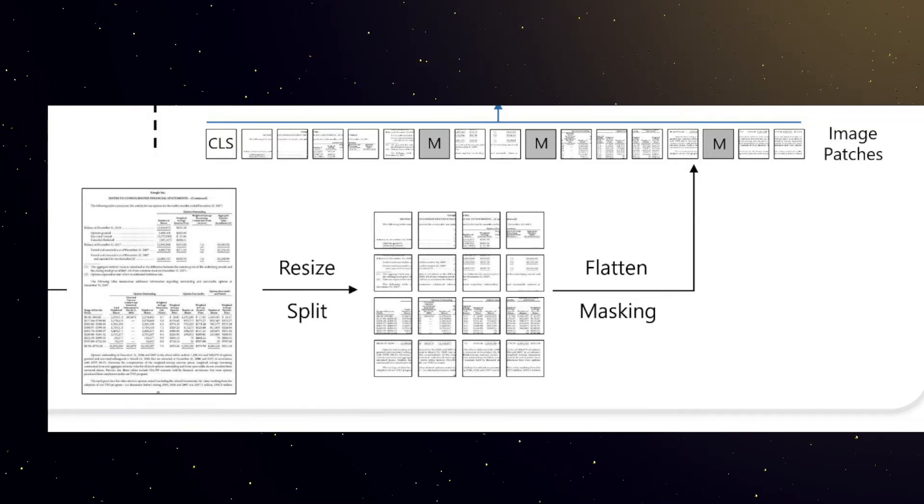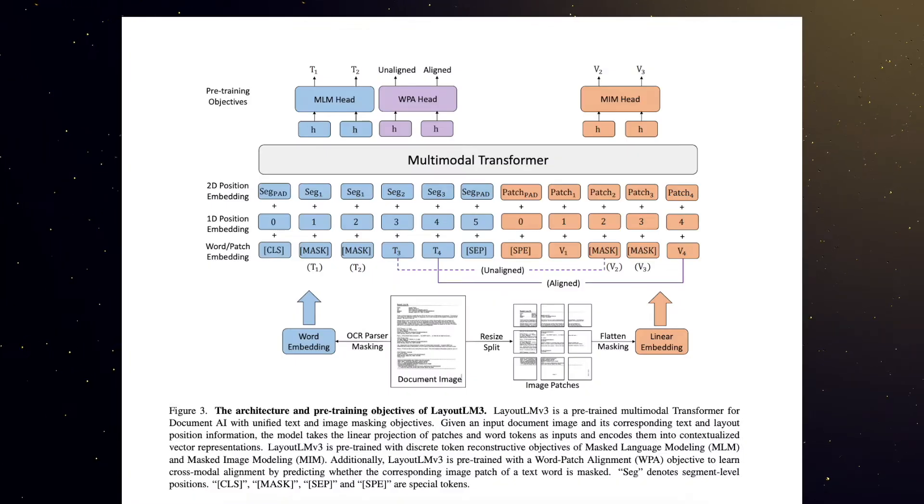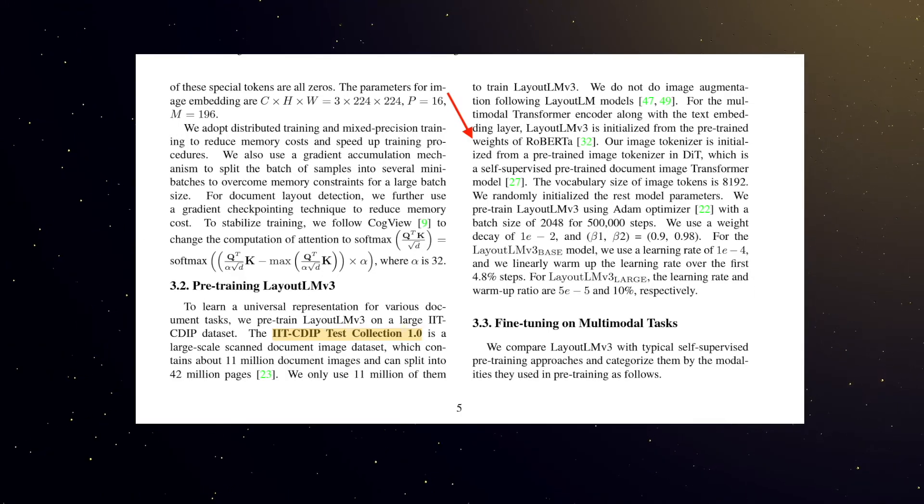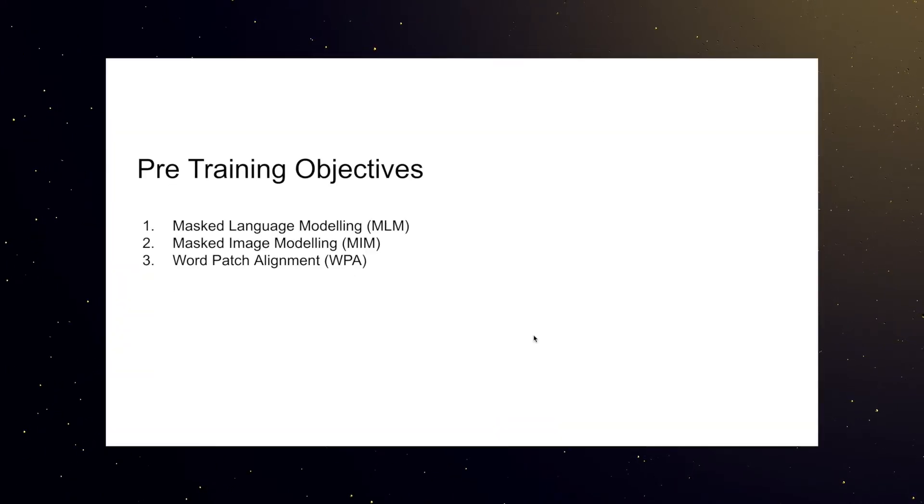This of course uses a typical ViT style image patching to train the model. Now they of course trained with a lot of images and text pairs and they did this with three main objectives.